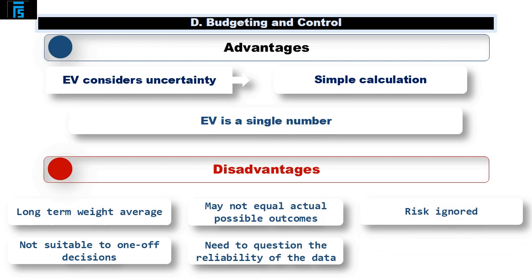Expected value can be seen to ignore the risk as the range of possible profit outcomes is not considered. In the above scenario, for example, the possible profit could be as high as 220,000, yet as low as 40,000.